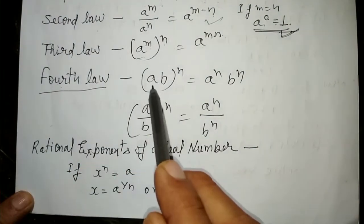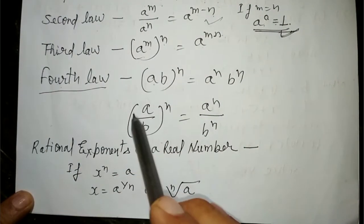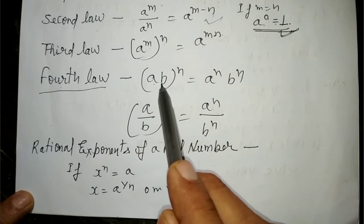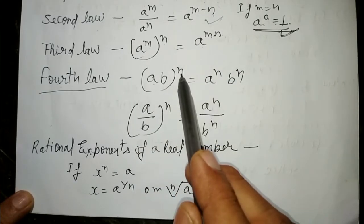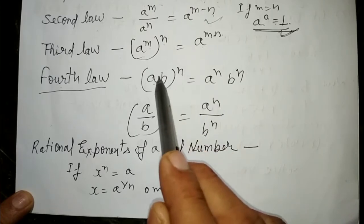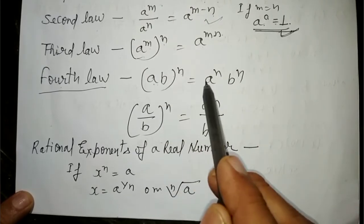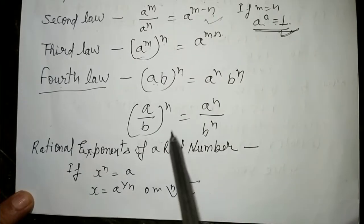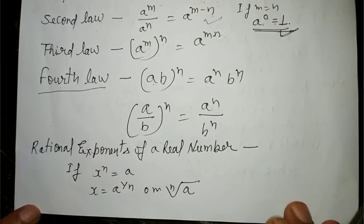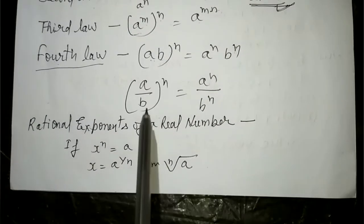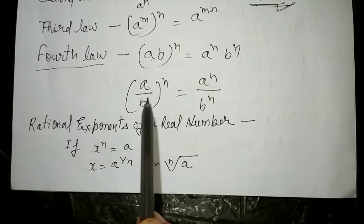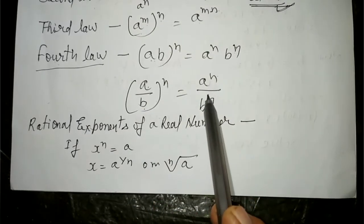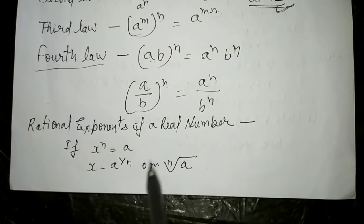Fourth law: (ab) whole power n — जब ये bracket open करेंगे तो ये power अलग-अलग distribute हो जाएगी: a to the power n into b to the power n. Similarly, (a upon b) whole power n = a to the power n upon b to the power n हो जाएगा।